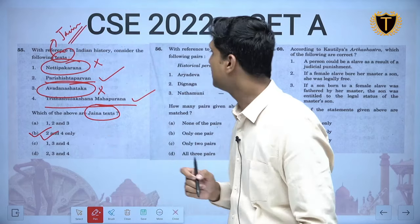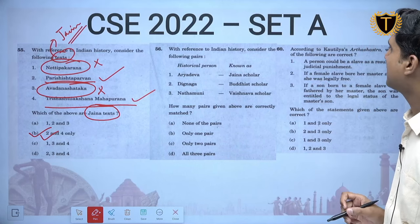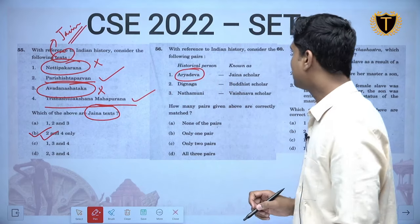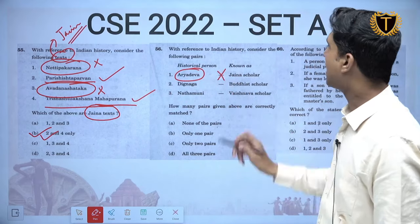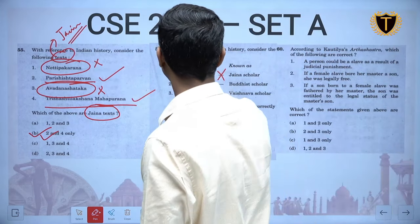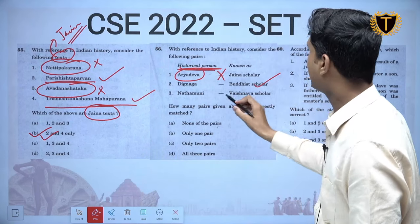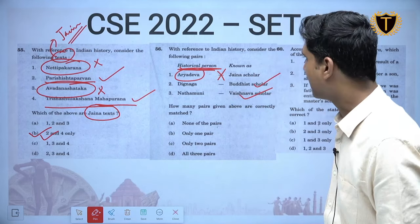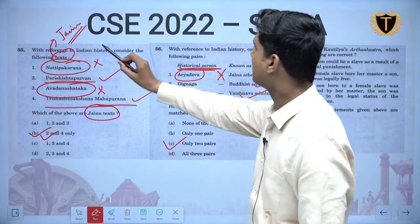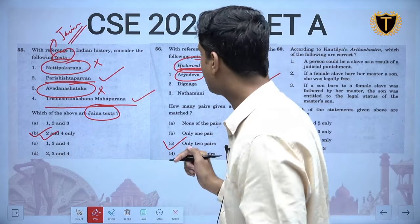With reference to Indian history — consider the following pairs of scholars: Aryadeva was a Buddhist scholar, not a Jain scholar — so that pair is wrong. Dignaga was a Buddhist scholar — correct. Nathamuni was a Vaishnava scholar — also correct. So only 2 pairs are correct. The idea is: texts and persons related to Jainism, Buddhism, and Vaishnavism need to be covered, and UPSC is now introducing other elements within these themes to raise the difficulty level.